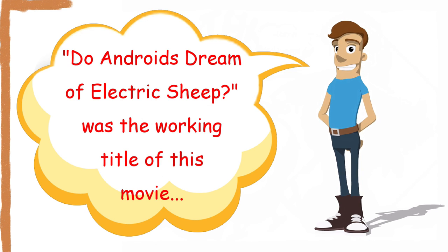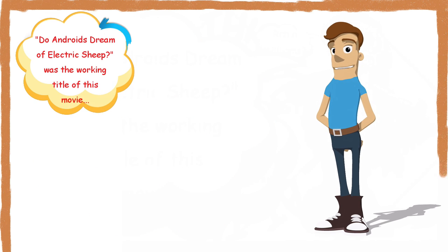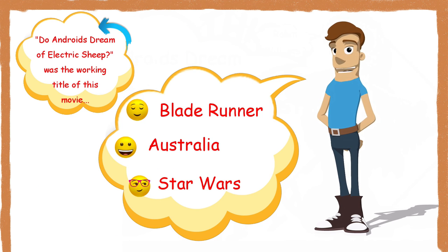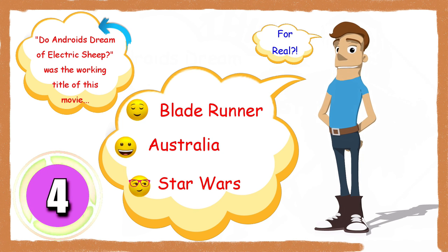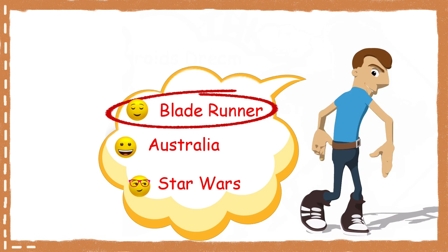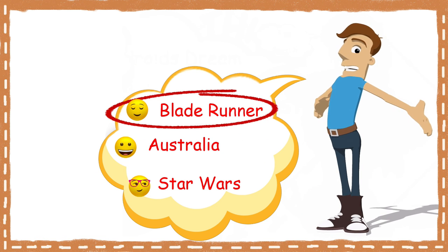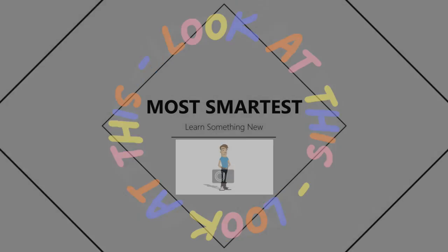Do Androids Dream of Electric Sheep was the working title of this movie. Blade Runner, Australia, or Star Wars? It was Blade Runner. Director Sir Ridley Scott regards this movie as his most personal and favorite.